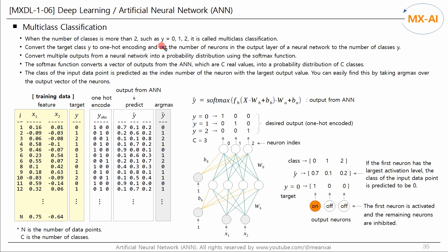If there are more than two classes, such as when Y is 0, 1, or 2, it is called multi-class classification. In the data below, there are two features X and a target Y. Target Y has three classes: 0, 1, and 2.